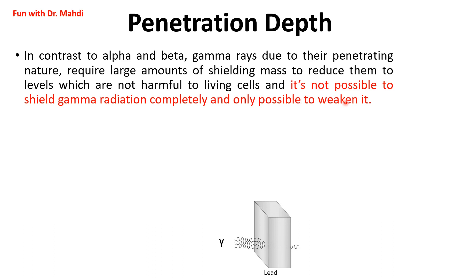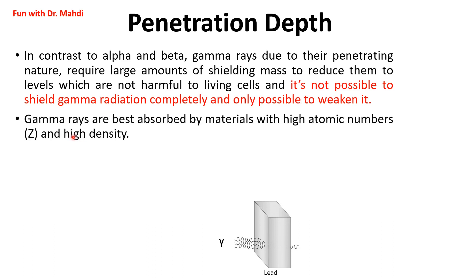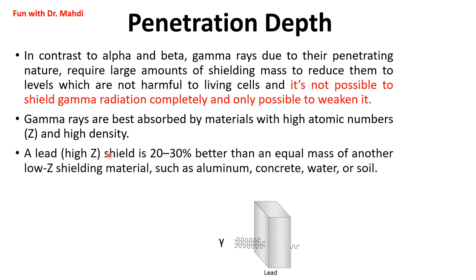Gamma rays are best absorbed by materials with high atomic numbers and high densities. For example, lead has a high atomic number, and shielding with lead will be 20 to 30 percent better than an equal mass of lower atomic number shielding materials like aluminum, concrete, water, or soil.